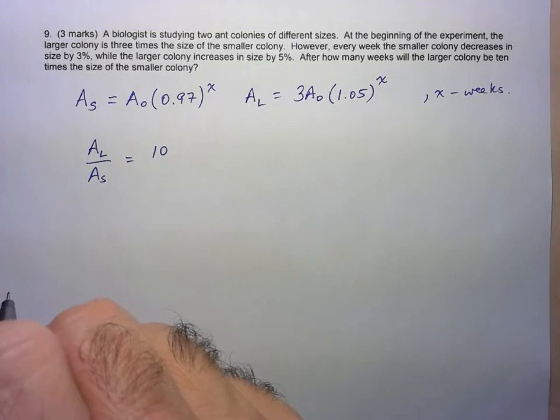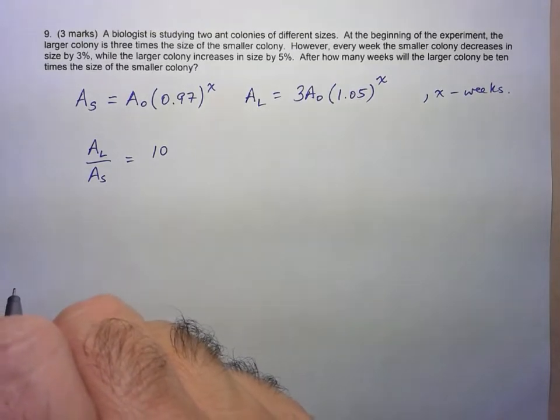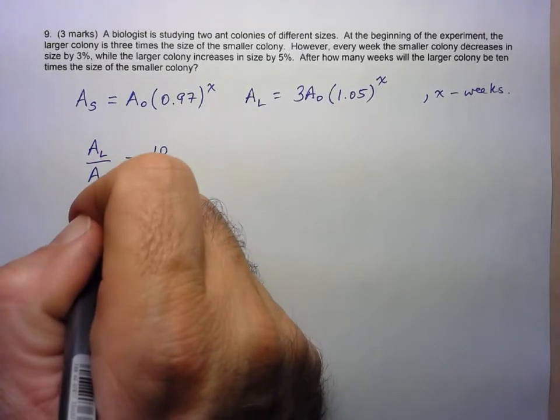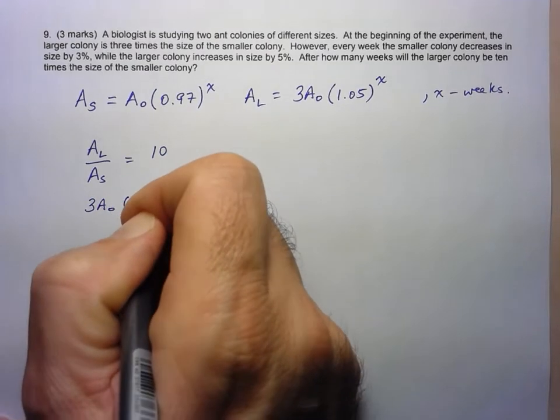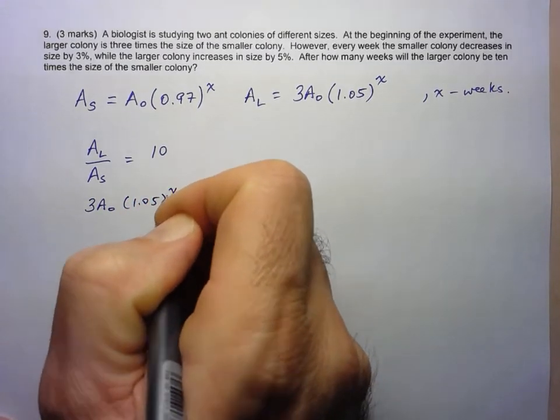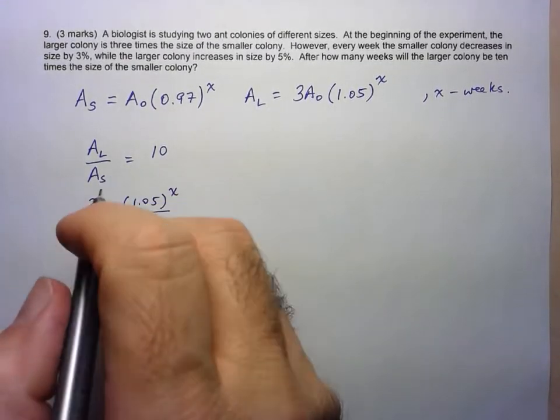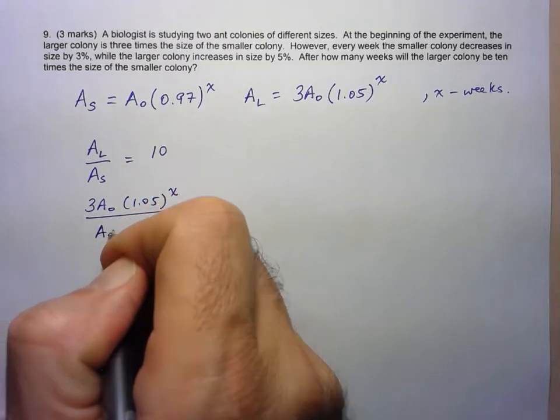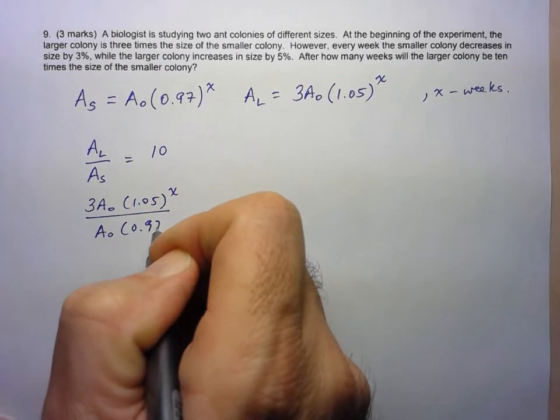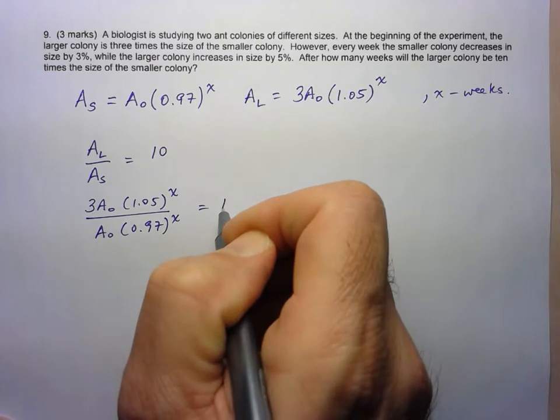So let's just input the two formulas we have for AL and AS. So AL is 3A0 times 1.05 to the X, and then AS is just A0 times 0.97 to the X, and that has to be equal to 10.